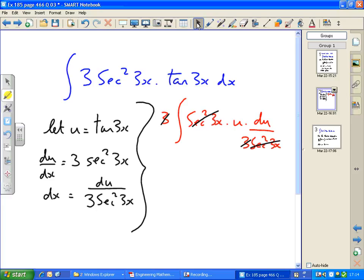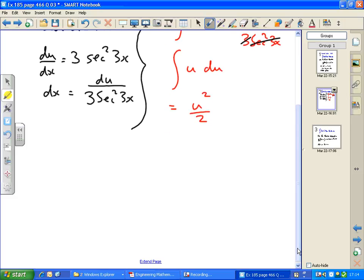So this becomes the integral of u du, which is just u squared over 2. And putting the value for u back in again, which is tan 3x, we end up with a solution, tan squared 3x over 2 plus c, which is one of the available solutions in the textbook.